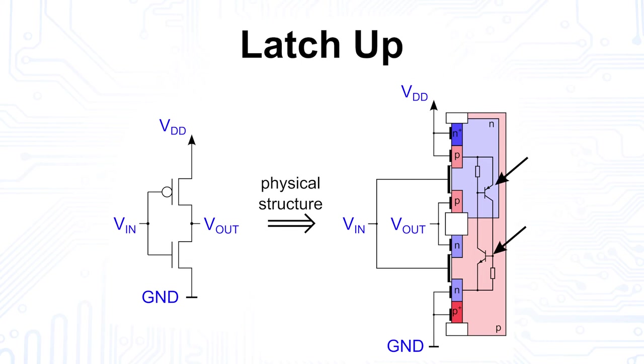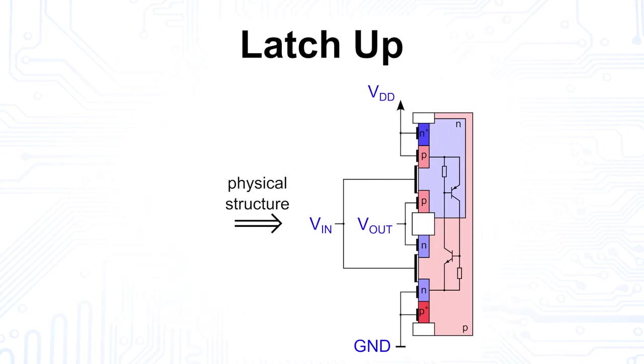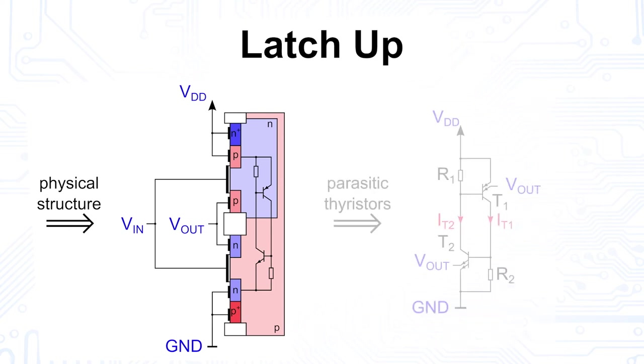If we draw these parasitic elements into an equivalent circuit, the problem becomes understandable. Here we see the parasitic thyristor T1, which can be ignited by a voltage spike at the input of the CMOS gate. The resulting current flow creates a voltage drop across resistor R2, which in turn ignites thyristor T2.